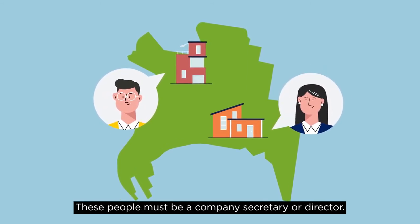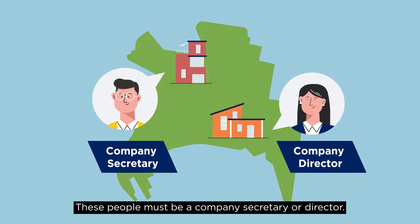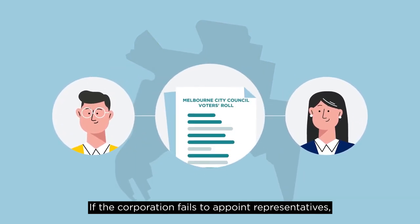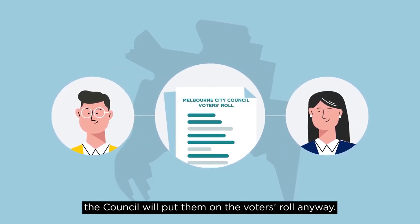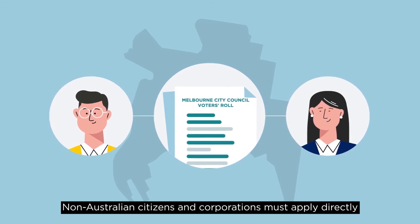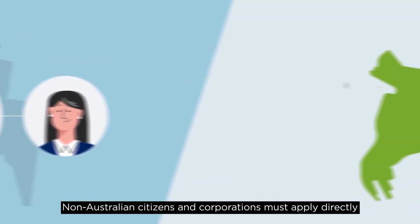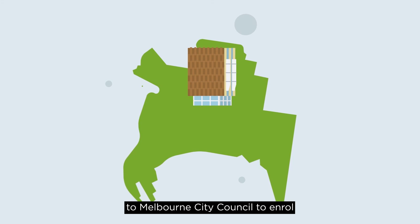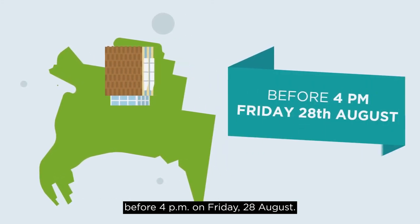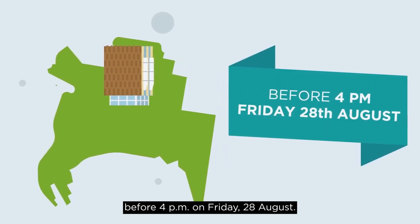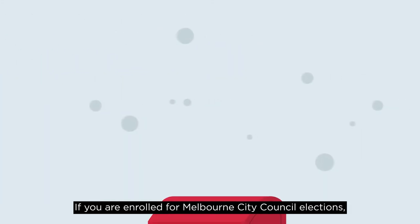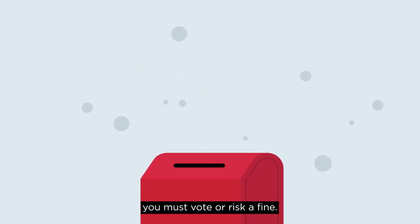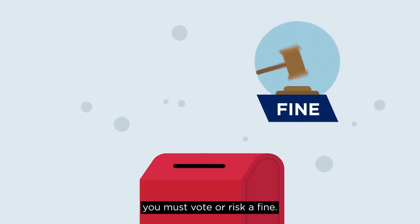These people must be a company secretary or director. If the corporation fails to appoint representatives, the council will put them on the voters' roll anyway. Non-Australian citizens and corporations must apply directly to Melbourne City Council to enrol before 4pm on Friday 28 August. If you are enrolled for Melbourne City Council elections, you must vote or risk a fine.